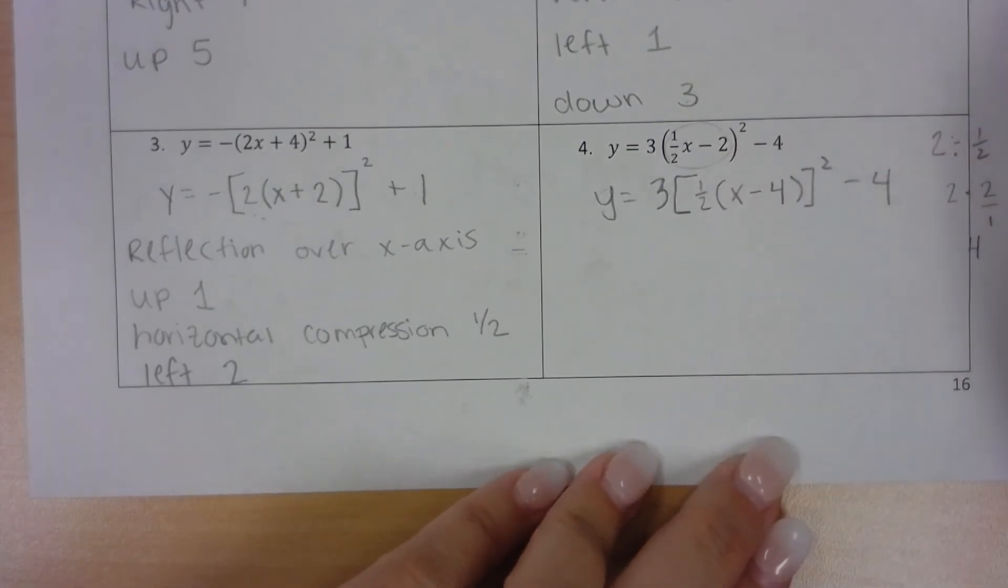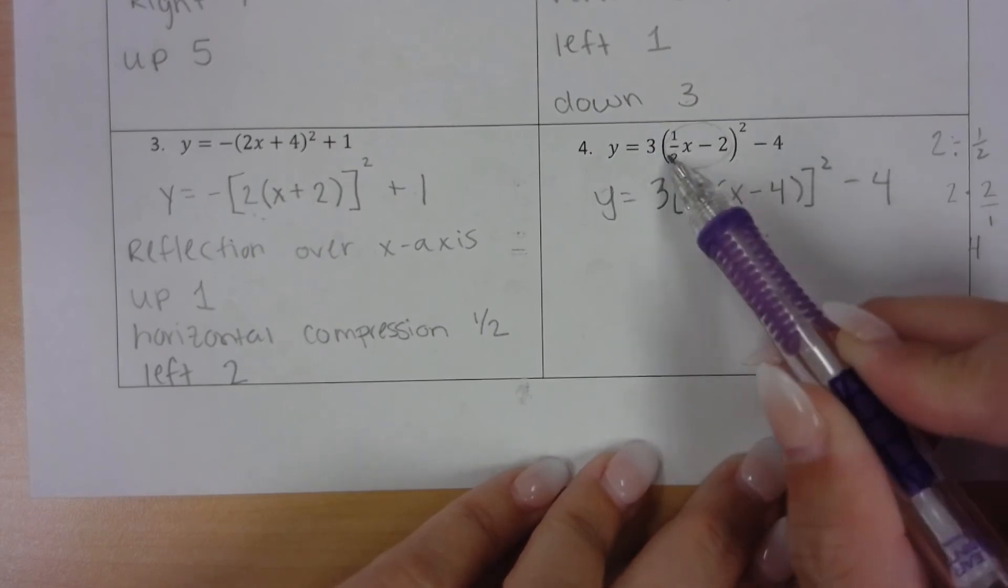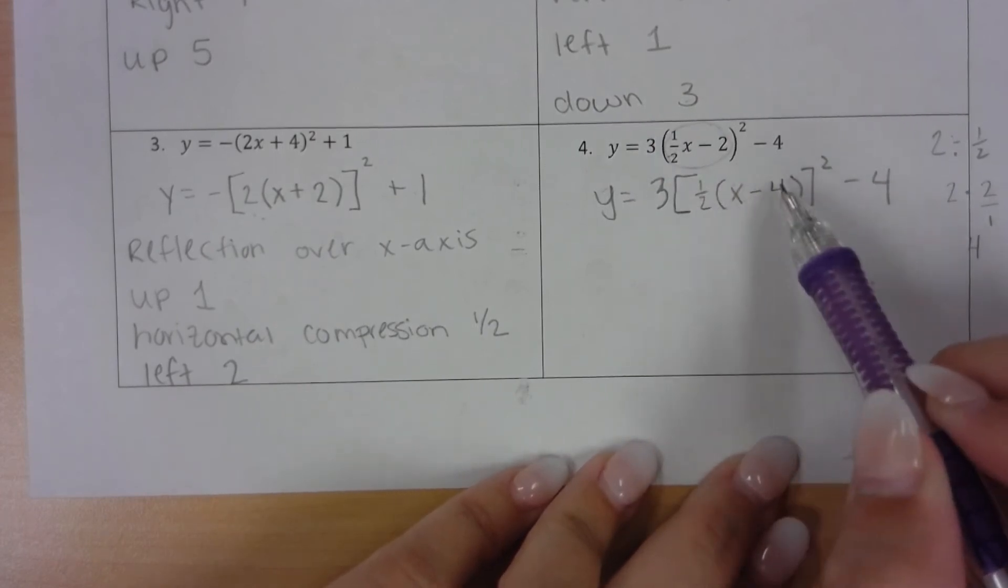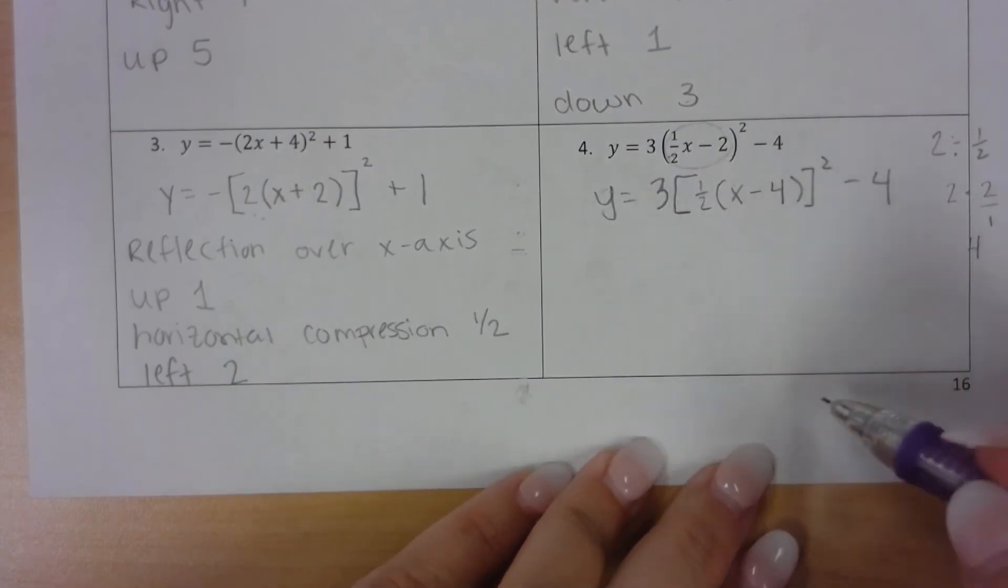So this is minus 4. Now I always like to double check that I didn't make a mistake. If I were to mentally distribute this back in, 1 half times x is 1 half x, 1 half times 4 is 2. So I know that I have factored this correctly.